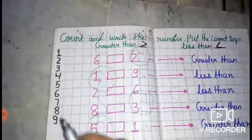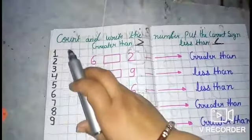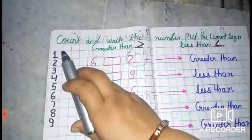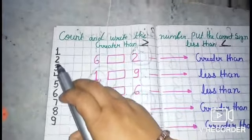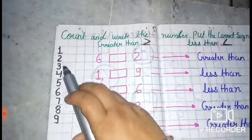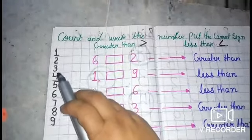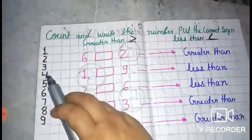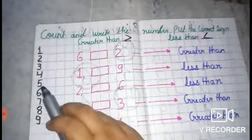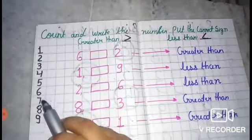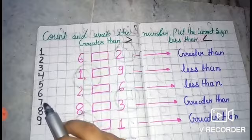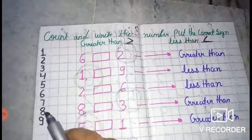All of you know counting one to nine. Let's revisit: one, two, three, four, five, six, seven, eight, nine.